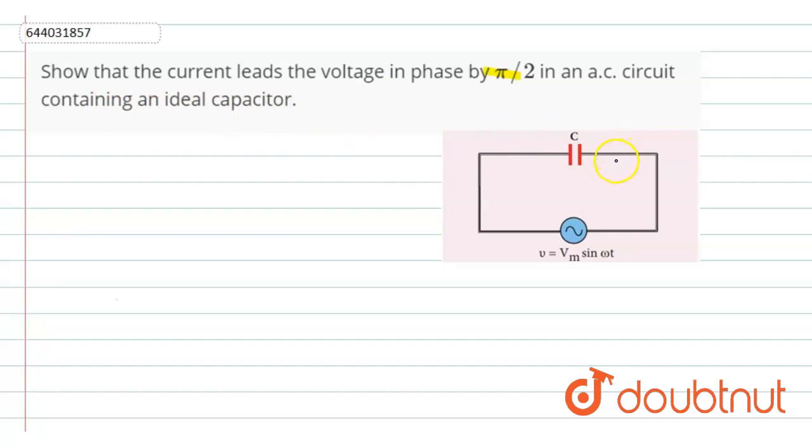Now as we know, voltage is also equals to charge upon capacitance. Now by applying Kirchhoff's law, what we get is vm sin ωt equals to q by C.